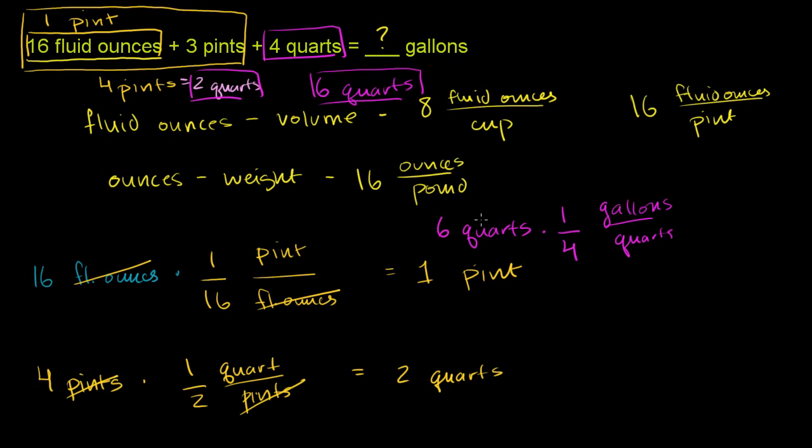Now we can multiply. The quarts cancel out, and you have 6 times 1/4, which is 6/4 gallons. We can divide the numerator and denominator by 2. This is the same thing as 3/2 gallons. If you want to write it as a mixed number, 3 divided by 2 is 1 with a remainder 1. So it's 1 and 1/2 gallons.